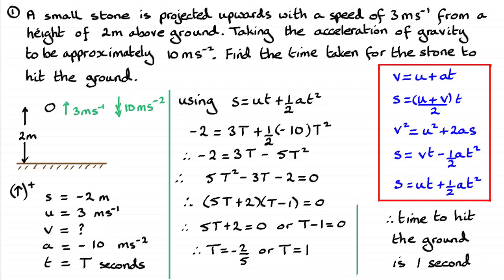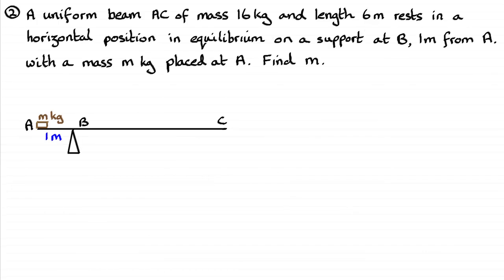In this workout there are five questions, so we'll move on to the second one. We've got a problem on moments. We've got a uniform beam AC of mass 16 kilograms and length 6 metres, resting in a horizontal position in equilibrium on a support at B, one metre from the end A. There's a mass of m kilograms placed at A, and you've got to find what that mass m would be. Just give you a moment to pause the video.